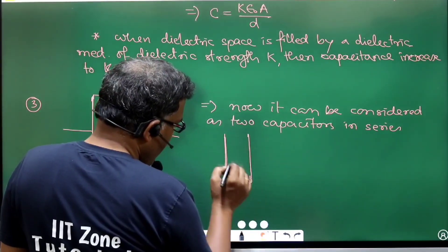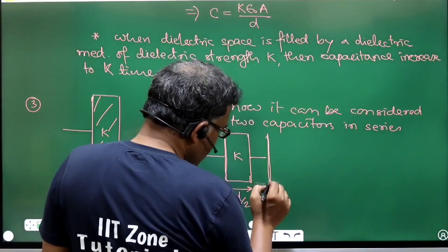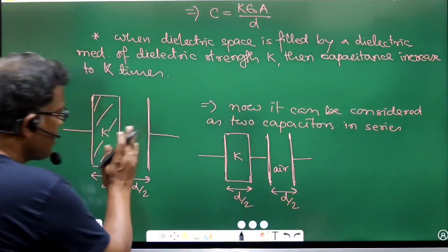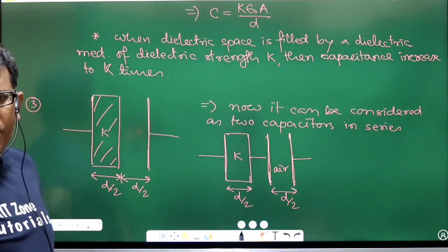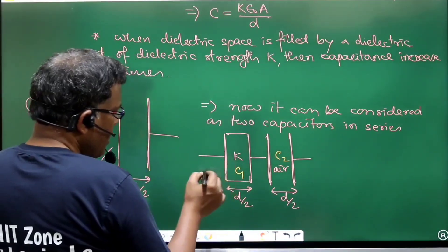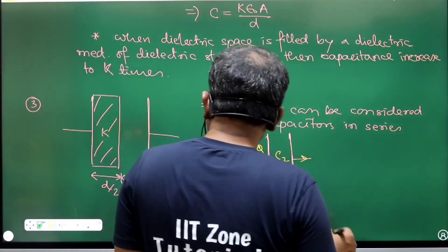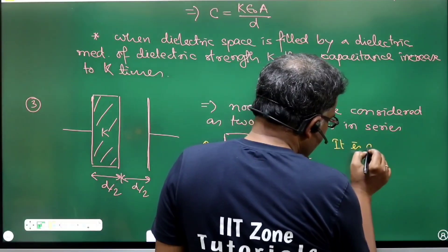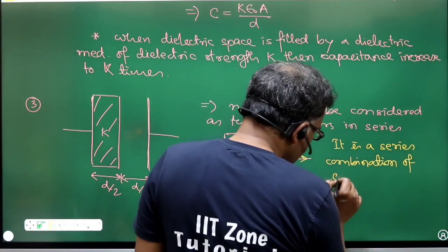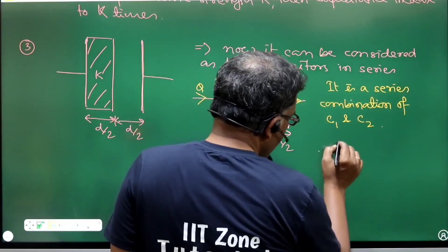The first capacitor C1 is the region filled with the dielectric medium, with separation d/2 and plate area A. The second capacitor C2 is the air-filled region, also with thickness d/2. Since charge flows through both, this is a series combination of C1 and C2.